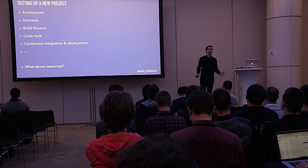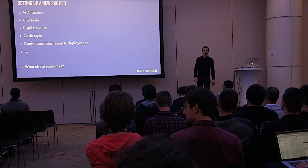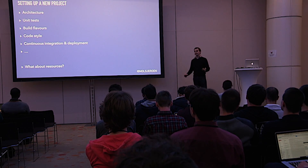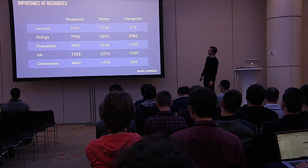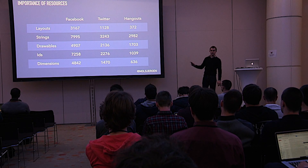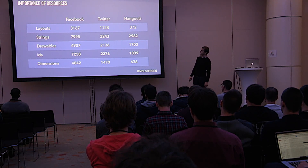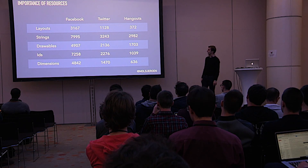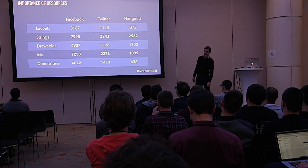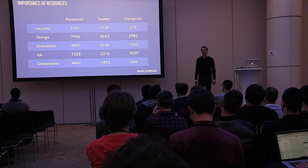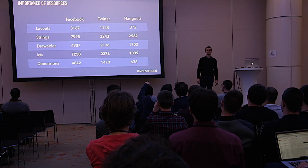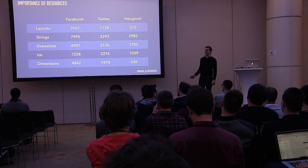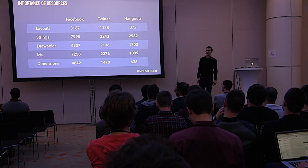You could say resources aren't important, that there aren't so many resources in an app. Well, that's not really true. Because if you open up the Facebook app, they have 3,200 layouts, 8,000 strings, 5,000 drawables, 7,300 IDs, and 5,000 dimensions. That's almost a whopping 28,000 resources. Do you still think you don't need a strategy to name your resources?